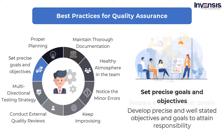The second best practice is that any procedure that includes a group of people needs accountability to succeed. You must develop precise and well-stated objectives and goals to attain responsibility. Smart quality assurance goals and objectives can be implemented: specified, measurable, achievable, relevant, and time-bound objectives are known as SMART goals. They are specific, quantifiable, attainable, relevant, and time-bound goals.